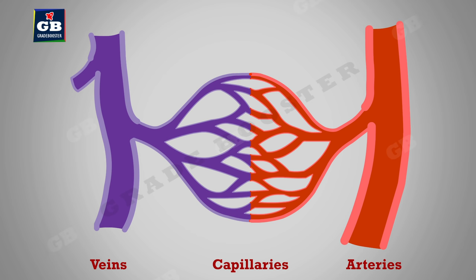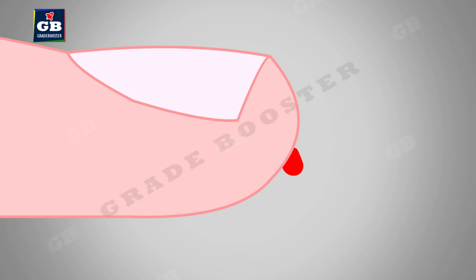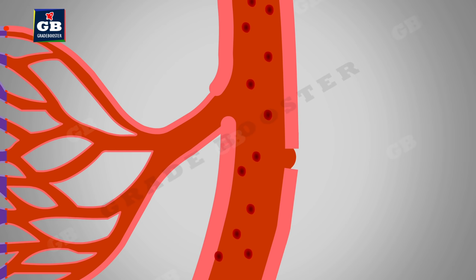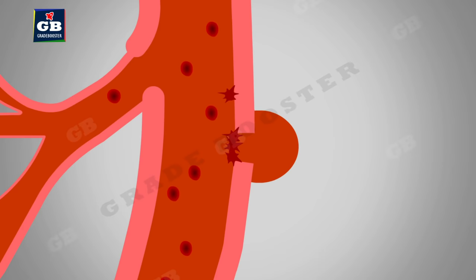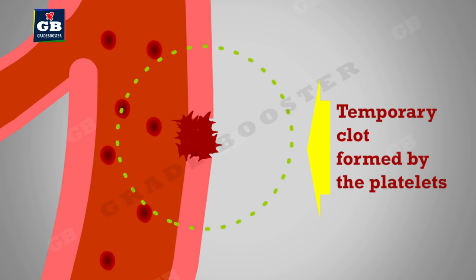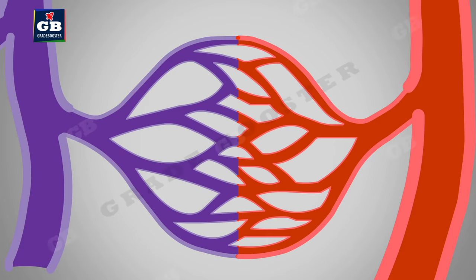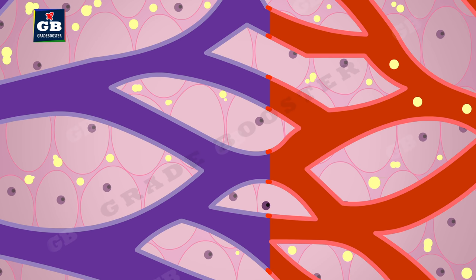If blood vessels are cut by accident, there will be leakage and loss of blood. To prevent this, platelets present in the blood migrate to the site of leakage and plug it temporarily. Later, a series of events takes place and permanent clotting of blood occurs. Apart from blood, there is one more fluid involved in transportation — that is lymph.